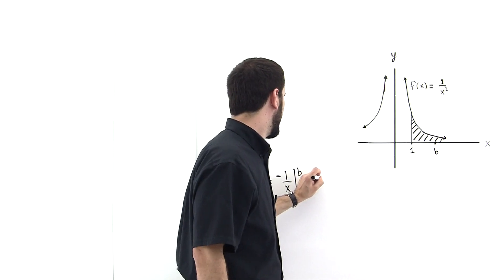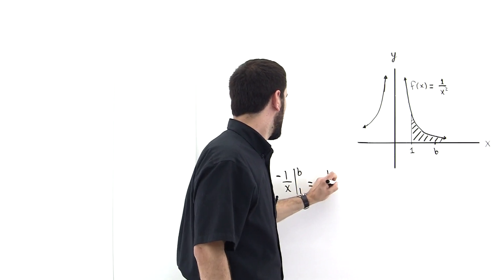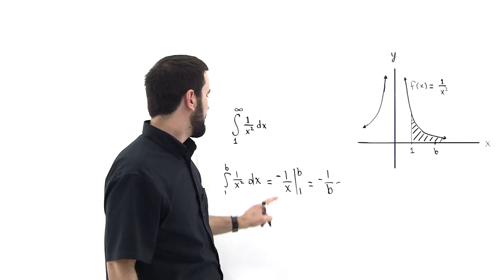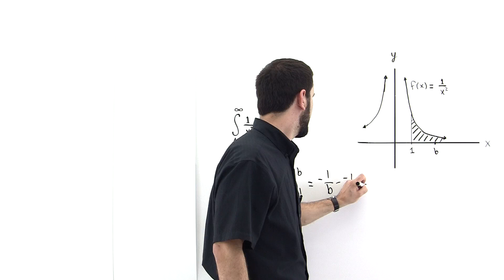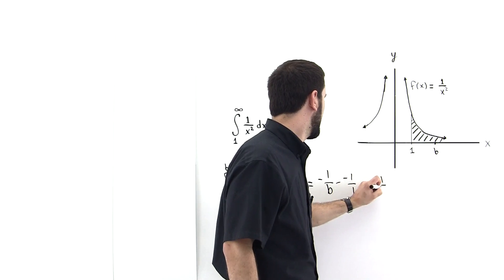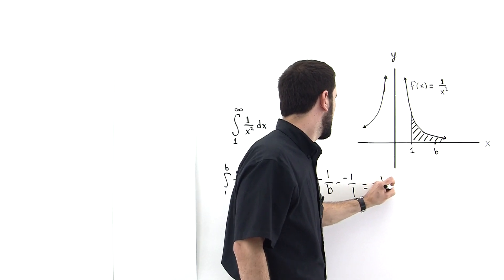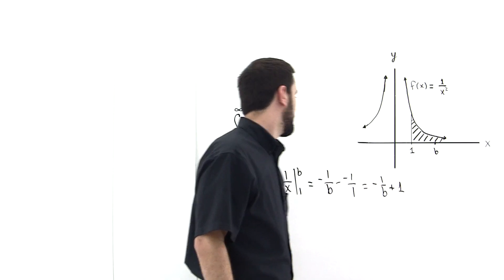This is equal to -1/b minus (-1/1), which equals -1/b + 1.